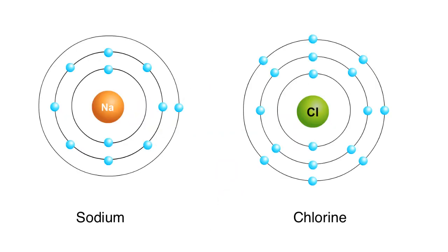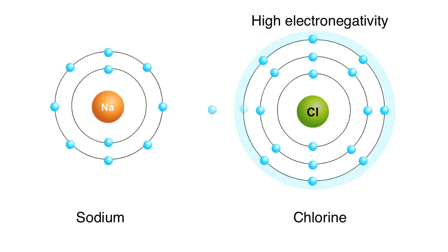Consider what happens between atoms of chlorine and sodium. Chlorine has a higher electronegativity than sodium. As a result, it strips an electron from the outer shell of the sodium atom. The sodium readily surrenders the electron to chlorine because it has lower electronegativity.